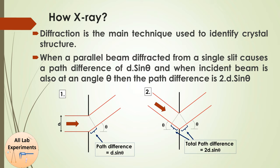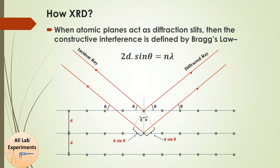How are X-rays working? This is a diffraction experiment. As we studied in high school, if parallel rays pass through a slit of width d, the path difference introduced is d·sinθ. In the second picture, if rays are incident at angle θ, the path difference is 2d·sinθ. In the case of atoms, the inter-atomic distances play the role of a slit. This path difference should equal λ or an integral multiple of λ for a maximum — this is known as Bragg's law.